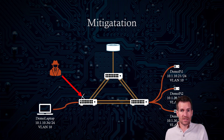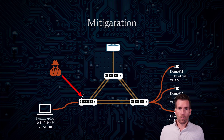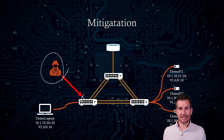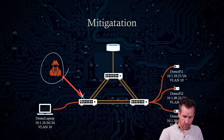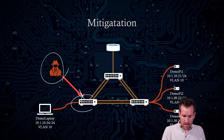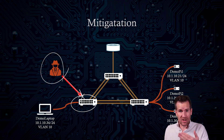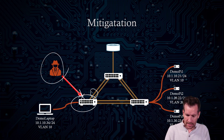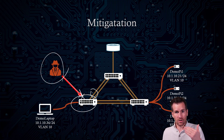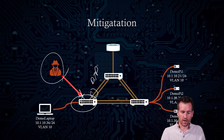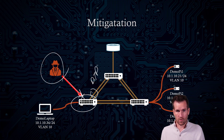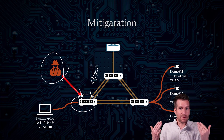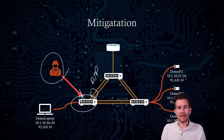Another mitigation is to not use dynamic trunking protocol — that addresses the switch spoofing attack. Do this by setting all access ports explicitly as access ports so they can't become trunk ports. And on trunk lines, just to be extra safe, configure them explicitly as trunk ports with no dynamic trunking protocol running. That way, DTP is not running on any of your ports, which mitigates that issue.